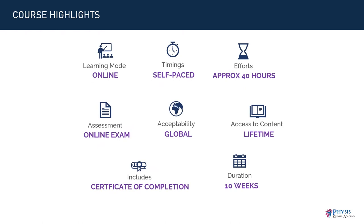Here are some important features of this course. First, the course is completely online — you simply need an internet connection with a device. Second, it is completely self-paced, so you can take modules at your own pace and time. Third, you need approximately 40 hours to finish the course along with the exam. Fourth, there is an online exam at the end. Fifth, the certification is valid globally. Sixth, you get lifetime access to the course content. Seventh, you receive a certificate of completion along with a performance card upon successful completion, with no extra cost for exams and certification. Eighth, the ideal duration is 10 weeks, though you can finish it earlier.